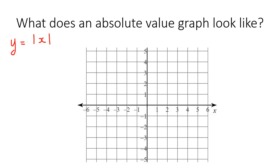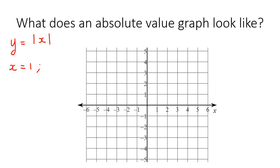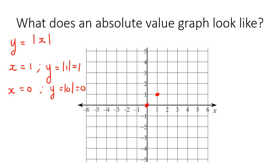Absolute value equations always have a V — the graph always makes a V, either going upwards or downwards. Let's choose some x values to see why. If x equals 1, the absolute value of 1 is just 1, so the y value is 1. If x equals 0, y equals 0. If x equals 2, the absolute value of 2 is just 2. Pretty boring so far, but here's where things get interesting.